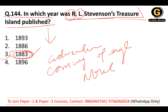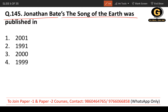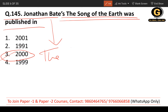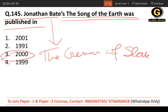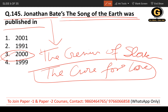Question 145: Jonathan Bate's The Song of the Earth was published in which year? The Song of the Earth was published in 2000. The correct answer is 2000. Other works by Jonathan Bate include The Genius of Shakespeare and The Cure for Love.